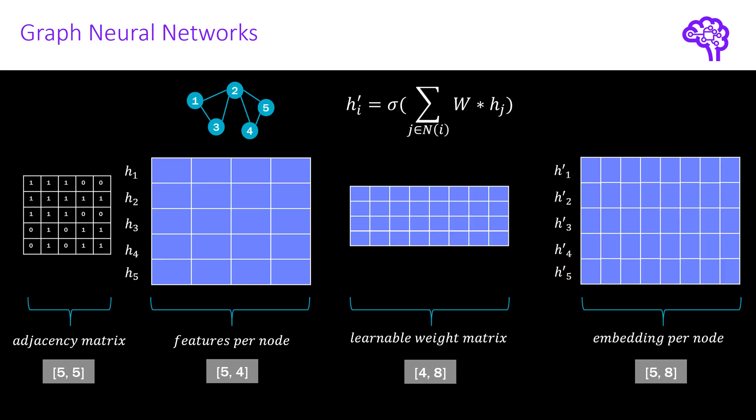For every other layer, we would now have a different shape for the node embeddings and the weight matrix, as we would use these embeddings as new input. Let's have a look at these matrix multiplications for node 1. First, we transform the node feature matrix by multiplying it with the learnable weight matrix. We multiply the first row with the first column, then the second column and so on, until we have a vector with a size of 8. We do this multiplication for the other nodes as well.